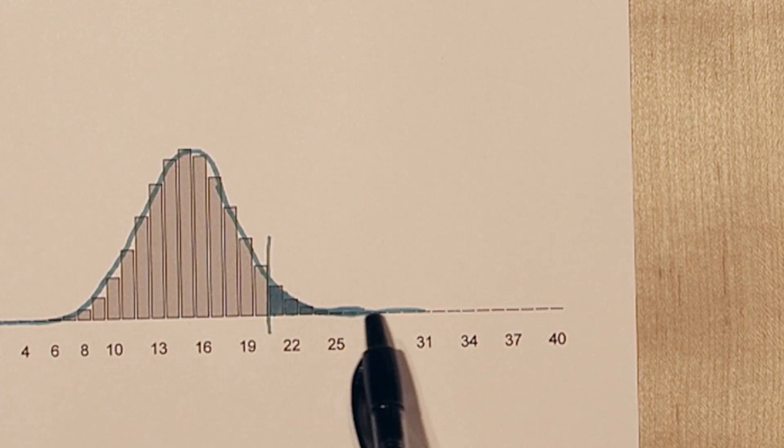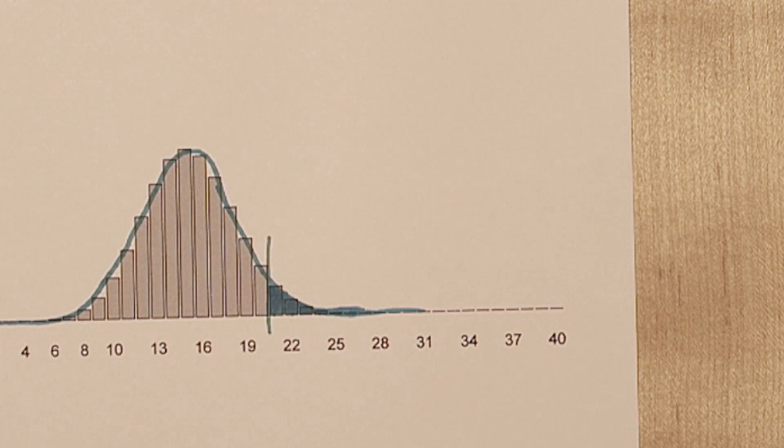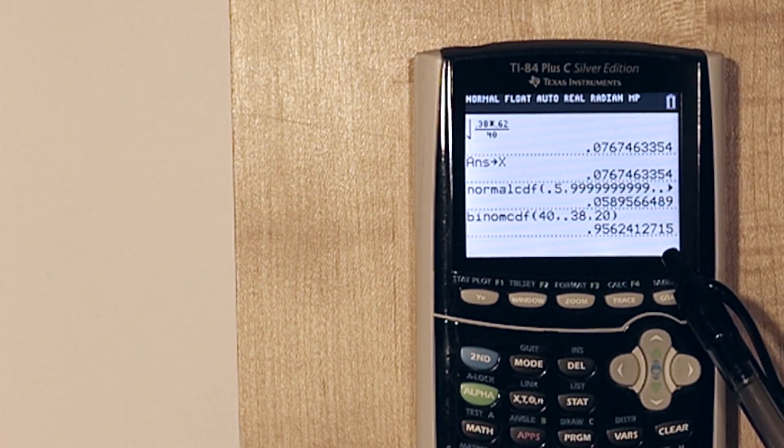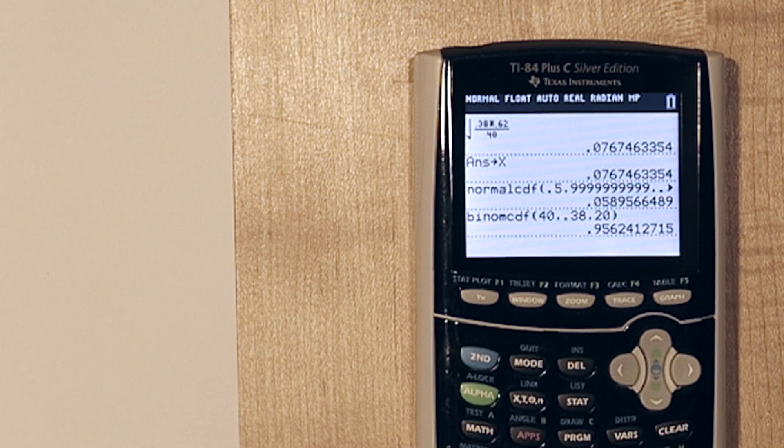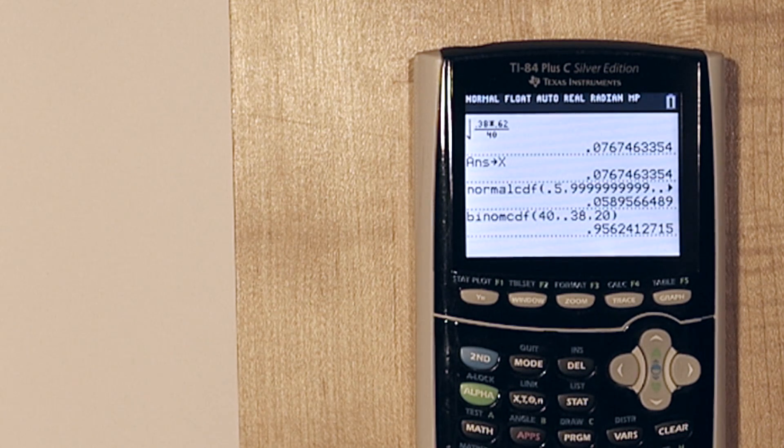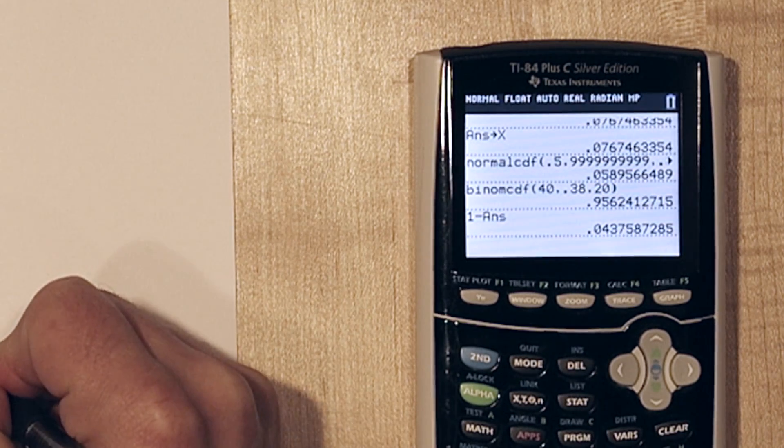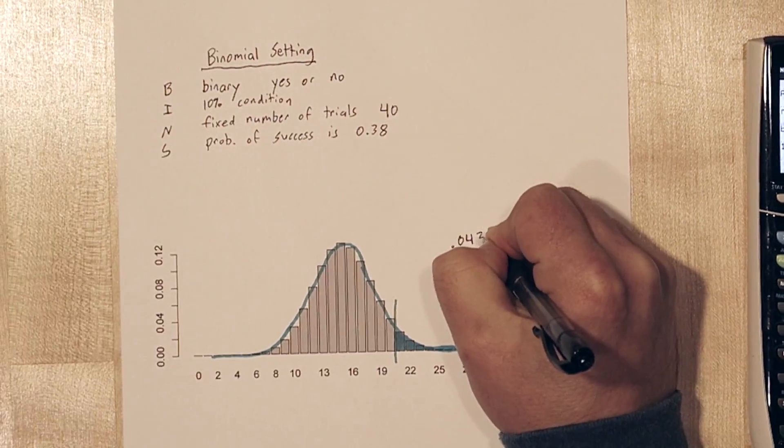With this calculator, we can't directly calculate these bars on the right. But it's okay. If this is the probability that 20 or less want a new mascot, the probability that more than 21 want a new mascot is just 1 minus what we found. So the actual answer is approximately 0.04376.